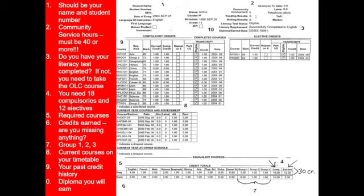Over here is your community involvement hours, and that should be 40 or more. That's a graduation requirement. The next thing we have is the literacy requirement, which should say 'successfully completed' in English. If it's not, you need to let us know if you don't already have a plan in place to satisfy that literacy requirement.